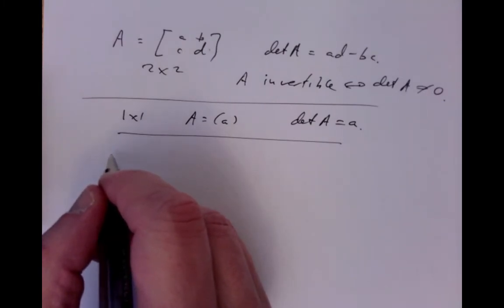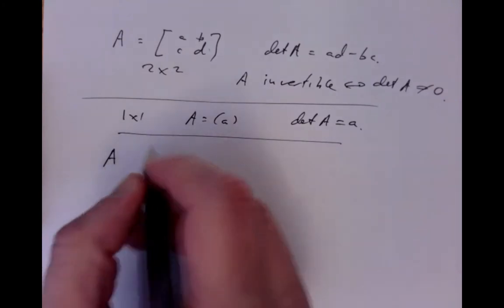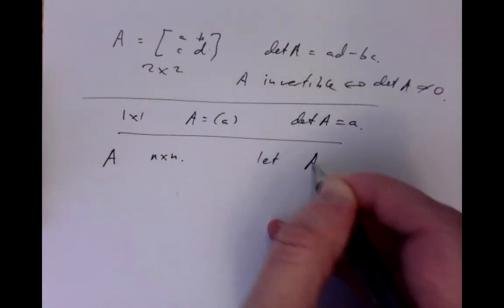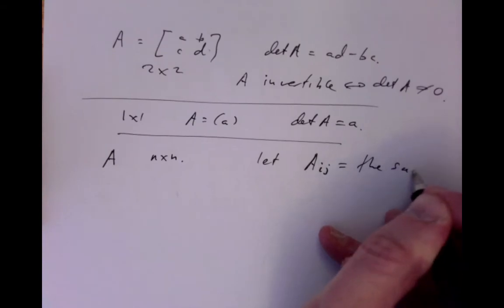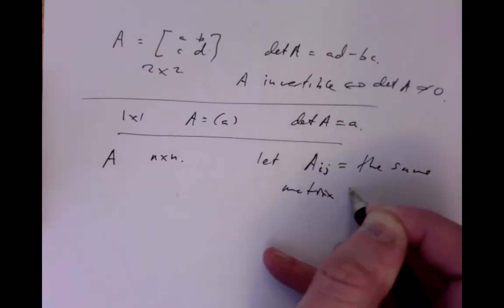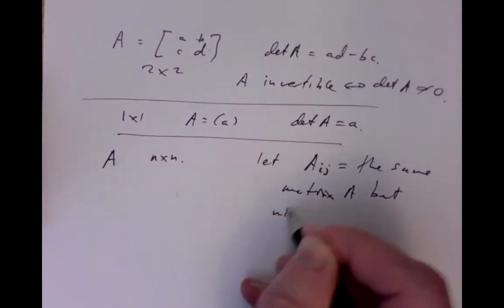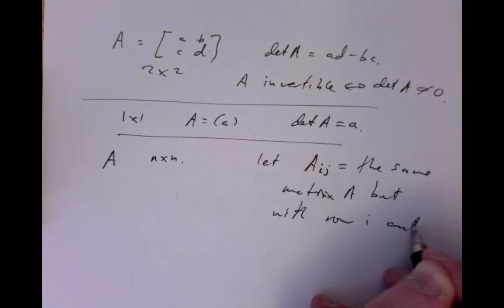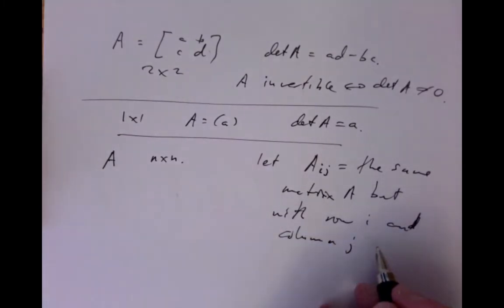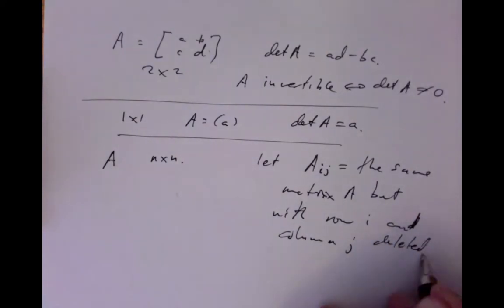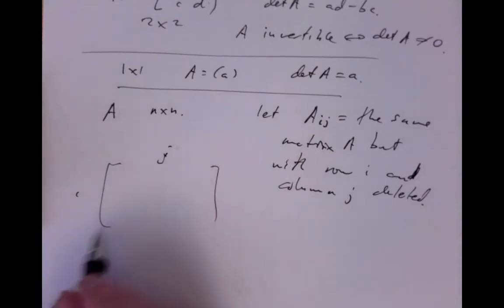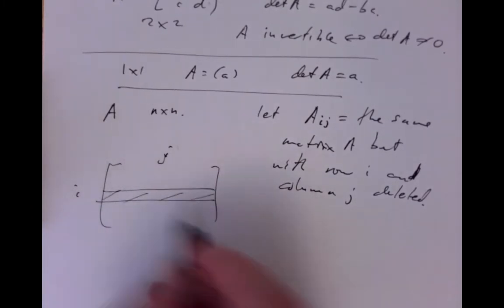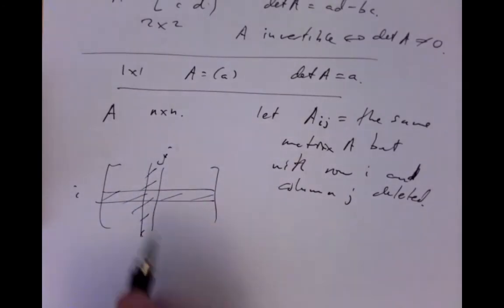For a larger matrix, we want to define it in terms of smaller ones. Define A as some n-by-n matrix. Let A_{IJ} be defined to be the same matrix A but with row I and column J deleted — removed. So we take this matrix, cut out row I and column J completely, and take what's left over — the leftover bits of the matrix that are still there once you've done that deleting.